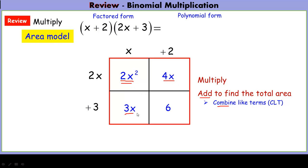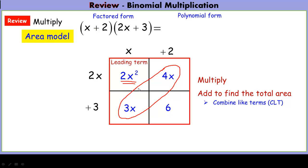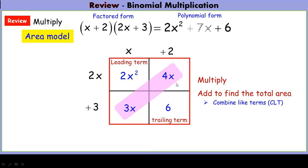We have a second degree term, two first degree terms, and a zeroth degree term. The only two we can add are the like terms: 4x and 3x. Putting the polynomial in descending order, the quadratic term is always the leading term, and the constant 6 is always the trailing term. The linear terms 3x and 4x combine to give 7x. So we've converted from factored form into polynomial form by multiplying the two factors.